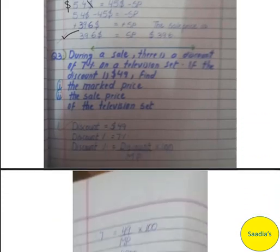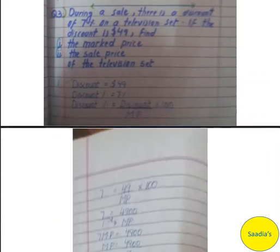Now let's look at question number 3. During a sale, there is a discount of 7% on a television set. If the discount is $49, find the mark price and the sale price of the television set. The discount given is $49 and the discount percentage given is 7%. We start with the discount percentage formula: discount percentage equals discount over mark price, multiplied by 100%.